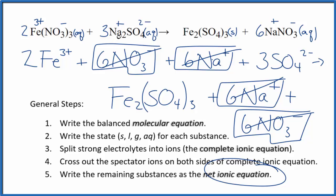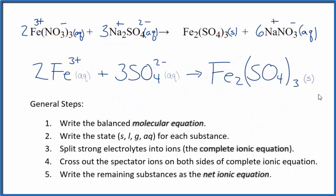I'll clean this up, write the states, we'll have our net ionic equation. So this is the balanced net ionic equation for iron 3 nitrate plus sodium sulfate. You'll note that charge is conserved, 2 times 3 plus, that's 6 plus.